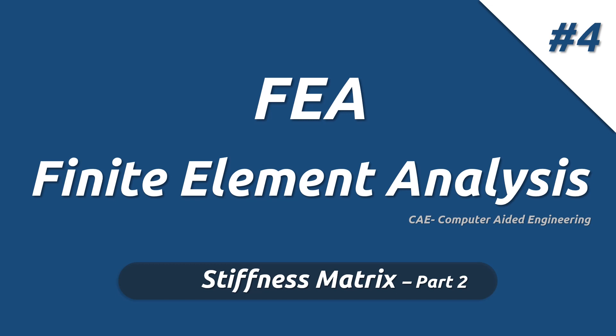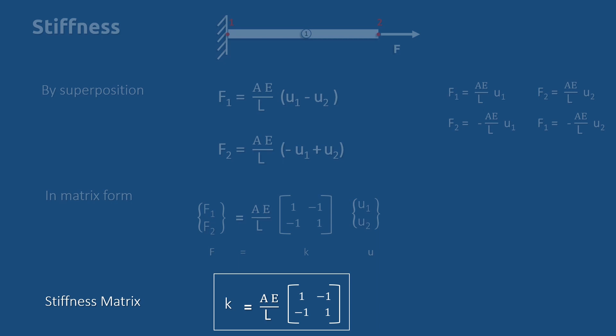Welcome to the session on expression of stiffness matrix in terms of strain energy. In the previous session, we got the expression for stiffness matrix as matrix K equal to EA by L into 1 minus 1 minus 1, 1.